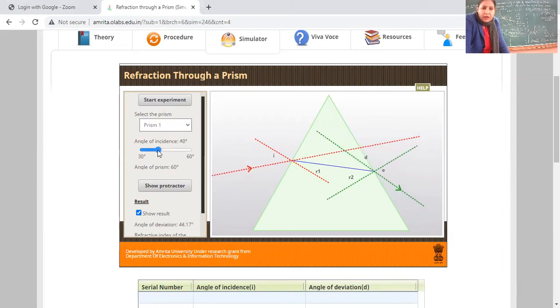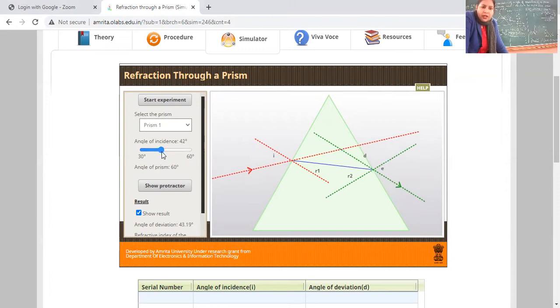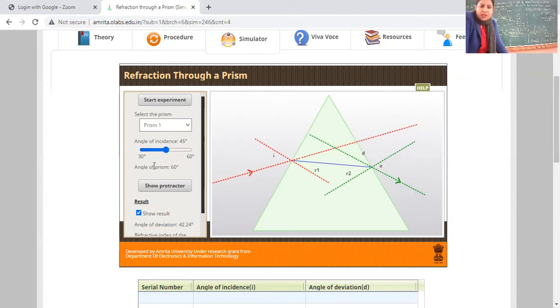Note these readings as well. At 35 degrees, we got 48.79 degrees. Let us take 40 degrees now. Note the angle of deviation is 44.17. Take the rounded value, 44 degrees. In the previous case it was 48 degrees, now it's 44 degrees. Now at 45 degrees I, the angle of deviation is 42 degrees.